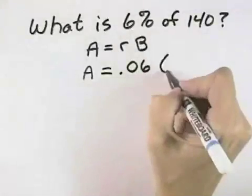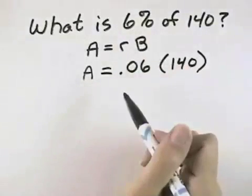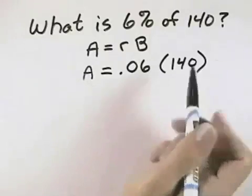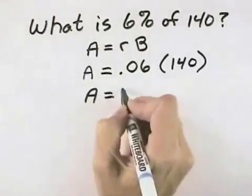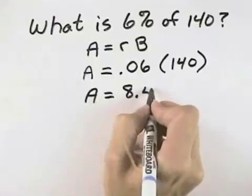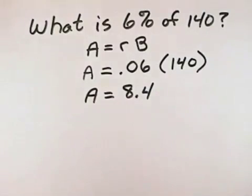Of is multiplication of 140. So what we're doing is multiplying .06 times 140. And when we do that, we'll see that the number A is equal to 8.4. That means 8.4 is 6% of 140.